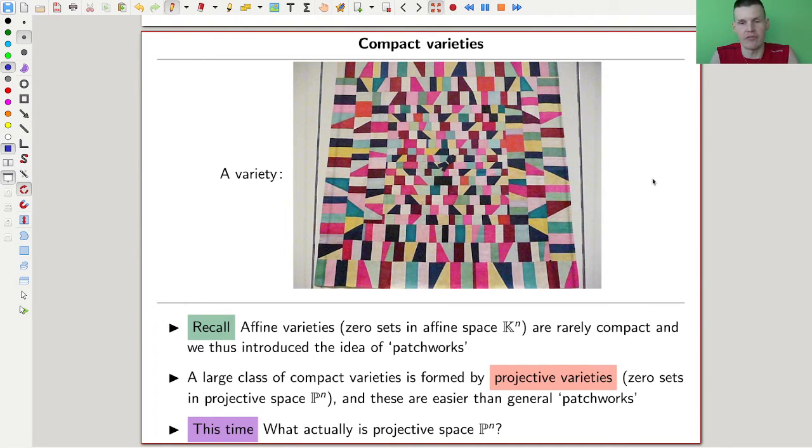part of the definition of a variety. But they are somehow easier than general varieties because we can actually write down coordinates for them and so on.